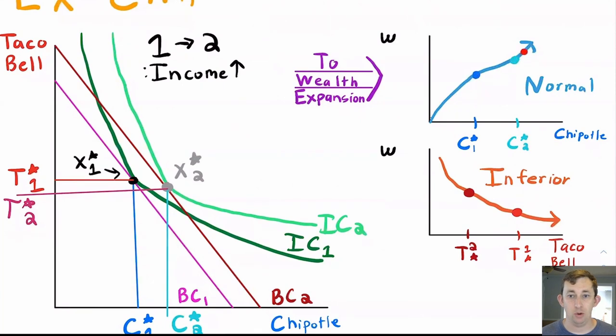So we might say this is a normal good because our wealth expansion is positive. For Taco Bell, we noticed that T two star is less than T one star, which means as we get more income, we buy less Taco Bell. And if we buy less Taco Bell as we have more income, that means it's an inferior good.